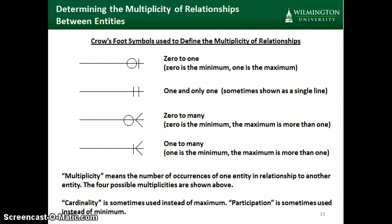We have four different types of relationships shown here. We can indicate a relationship where the multiplicity — the number of occurrences — is either 0 to 1, 1 and only 1, 0 to many, or 1 to many. As we look at how two entities are related, the maximum multiplicity is sometimes called cardinality, and the minimum multiplicity is sometimes called participation, which is always 0 or 1. Either we participate, which would be a 1, or we don't participate, which would be the 0 relationship.